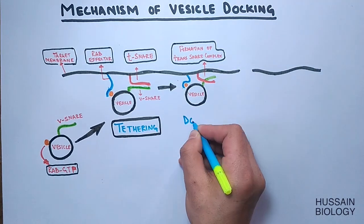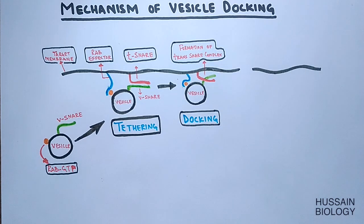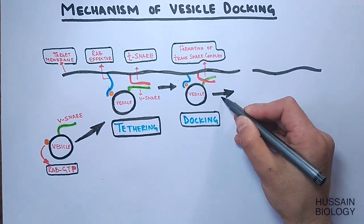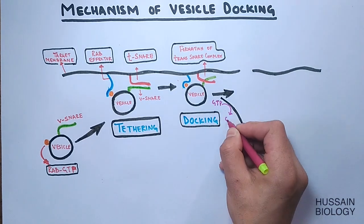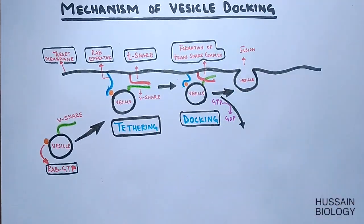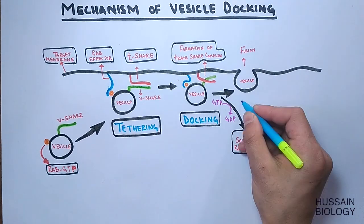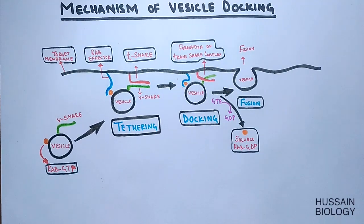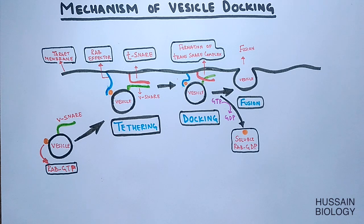Formation of the trans-SNARE complex leads to docking of the vesicle to the target membrane. After docking, the Rab protein hydrolyzes its bound GTP into GDP, thereby locking the vesicle onto the target membrane and releasing Rab GDP into the cytosol. This concludes the fusion of the vesicle to the target membrane.